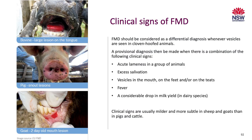Cattle are an indicator species — they're highly susceptible to aerosol infection and the clinical signs are very overt in cattle. In sheep, clinical signs aren't as overt, but they are equally susceptible to the virus and it's still something to be aware of.